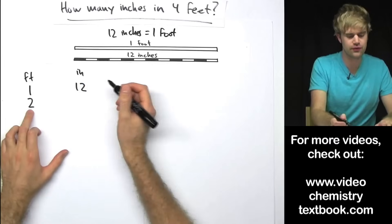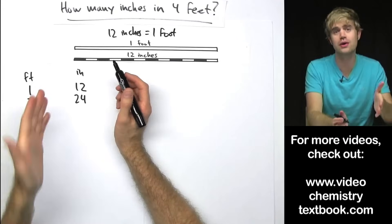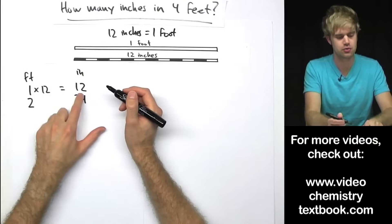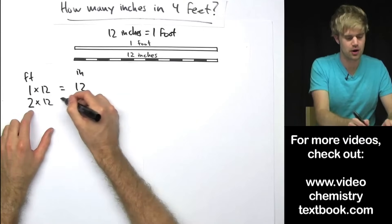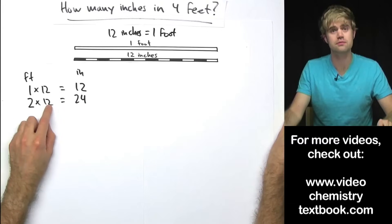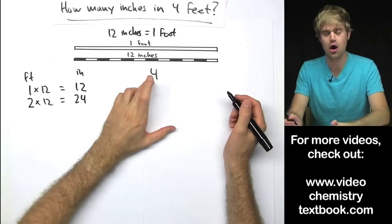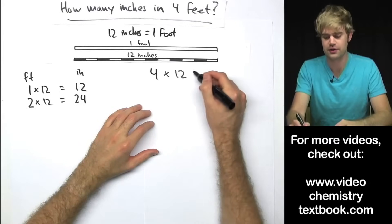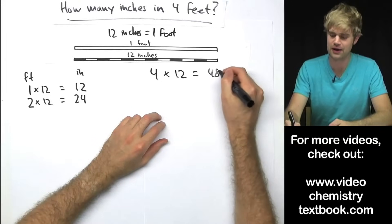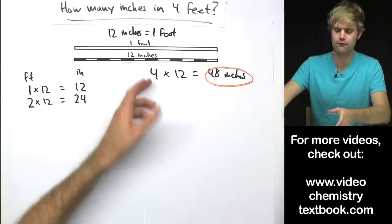If you have 2 feet, you're going to have 24 inches. What am I doing here with the math? I'm doing multiplication — 1 times 12 equals 12, 2 times 12 equals 24. This is the number of feet; this is the number of inches. So to figure out how many inches are in 4 feet, I'll just do 4 feet times 12 inches, because I know that there are 12 inches in each foot, and I'm going to get 48 inches for my answer. 4 times 12.